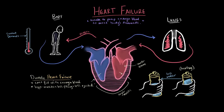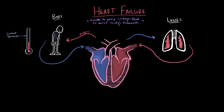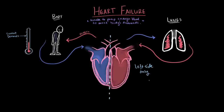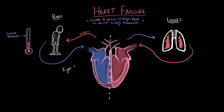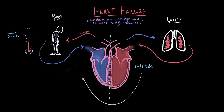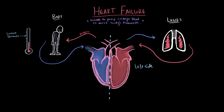We've shown both types of heart failure happening on both sides, but this isn't always the case. It's definitely possible to have isolated heart failure — maybe only on the left side, or only on the right side. One important thing to note is that usually a left-sided case happens first, and then that ends up leading to right-sided failure. This isolated failure can happen with either systolic or diastolic. Depending on which side it's happening on, the symptoms will be a little different.